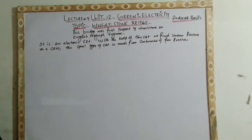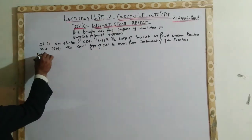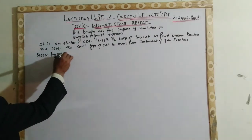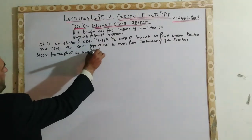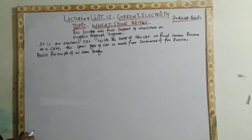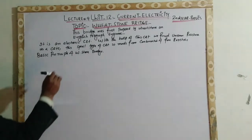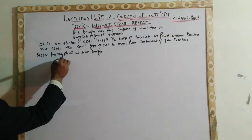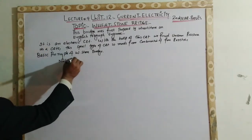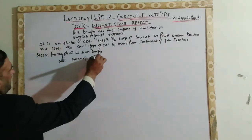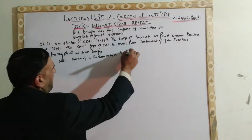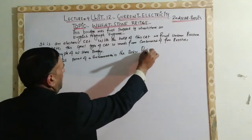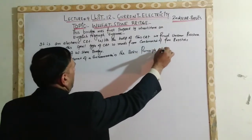What is the basic principle of Wheatstone Bridge? The basic principle of Wheatstone Bridge — remember, the basic principle of Wheatstone Bridge is the null point of a galvanometer. The null point of a galvanometer is the basic principle of Wheatstone Bridge.